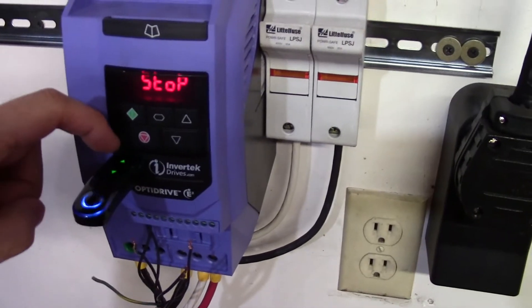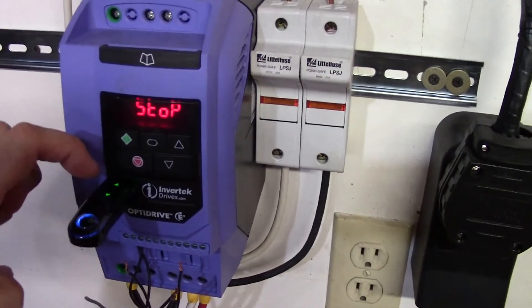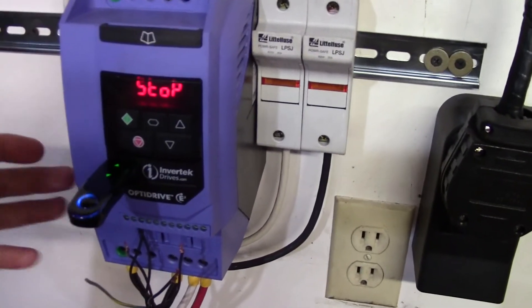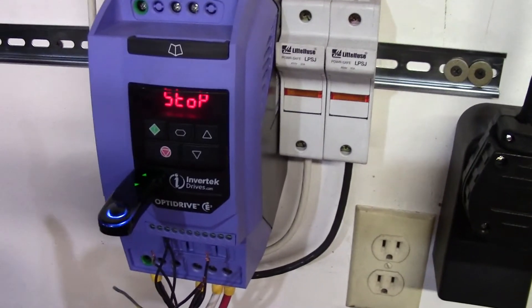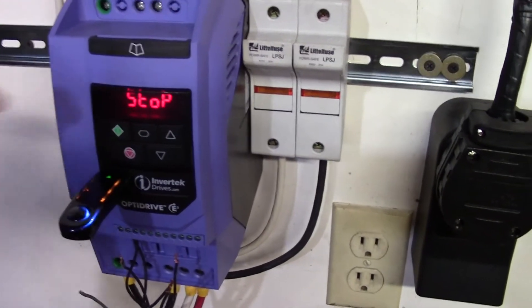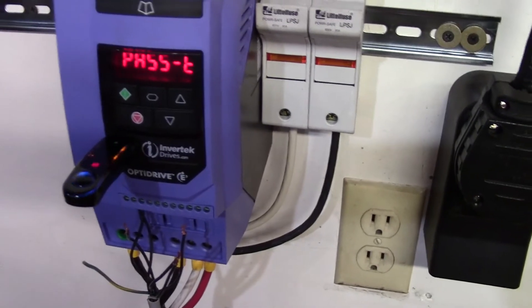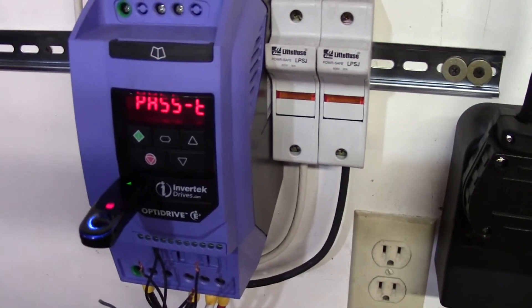It's unlocked. Now I hit the arrow pointing to the drive and I'm going to load those settings back into the drive. Now it doesn't take the settings out of the drive, so I'm just double loading here. This drive already has those settings, but I just wanted to do it so you could see how fast it was.